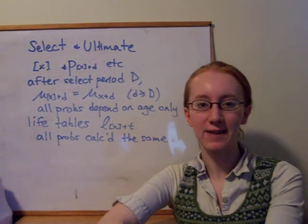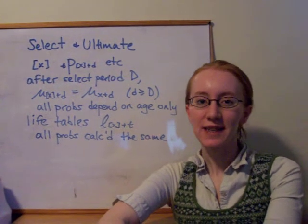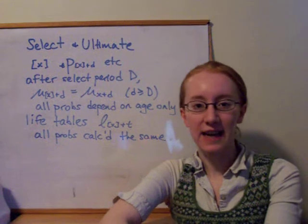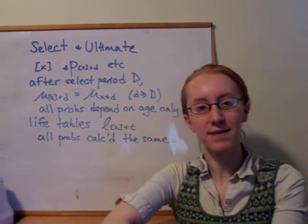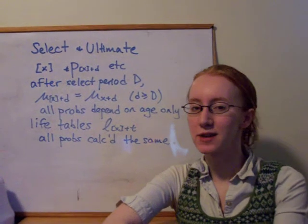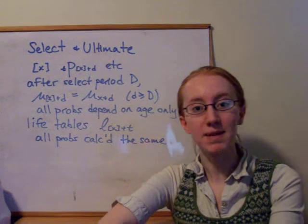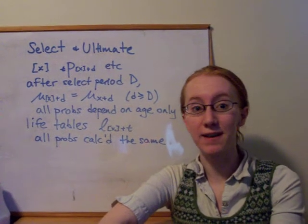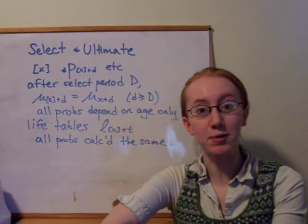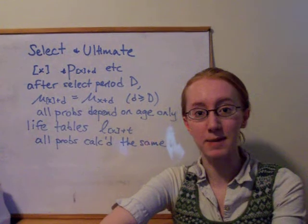Hi everyone, welcome to the week 5 video for ACSI 232. This week we talked about select and ultimate mortality, which is a way of modeling the effect that when someone buys an insurance policy, they're probably going to be much healthier than an average person of that same age, because they have to provide proof of their health at the time they buy their policy.